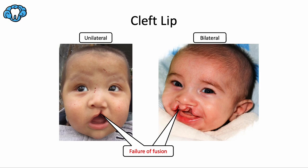Cleft lip is the most common facial birth defect and it affects approximately one in every 700 to 1,000 births. A cleft is at its core a failure of fusion. Cleft lip specifically results from a lack of fusion between the medial nasal prominence, which would involve the nasal tip and the philtrum, and the maxillary prominence, which would include the lateral upper lip area.